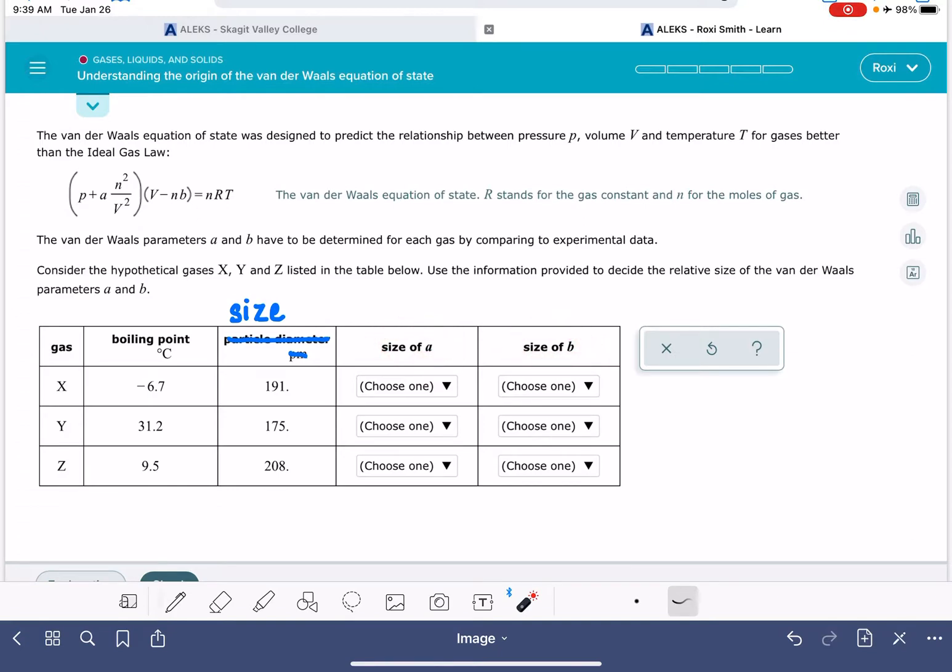Of the two constants A and B, B is the constant that corrects for the size of the gas particles. In an ideal gas, we assume that the gas particles have no volume. They have no size. That's obviously not accurate. They do have size. And the larger the size is of a gas molecule, the more significant this correction factor has to be.